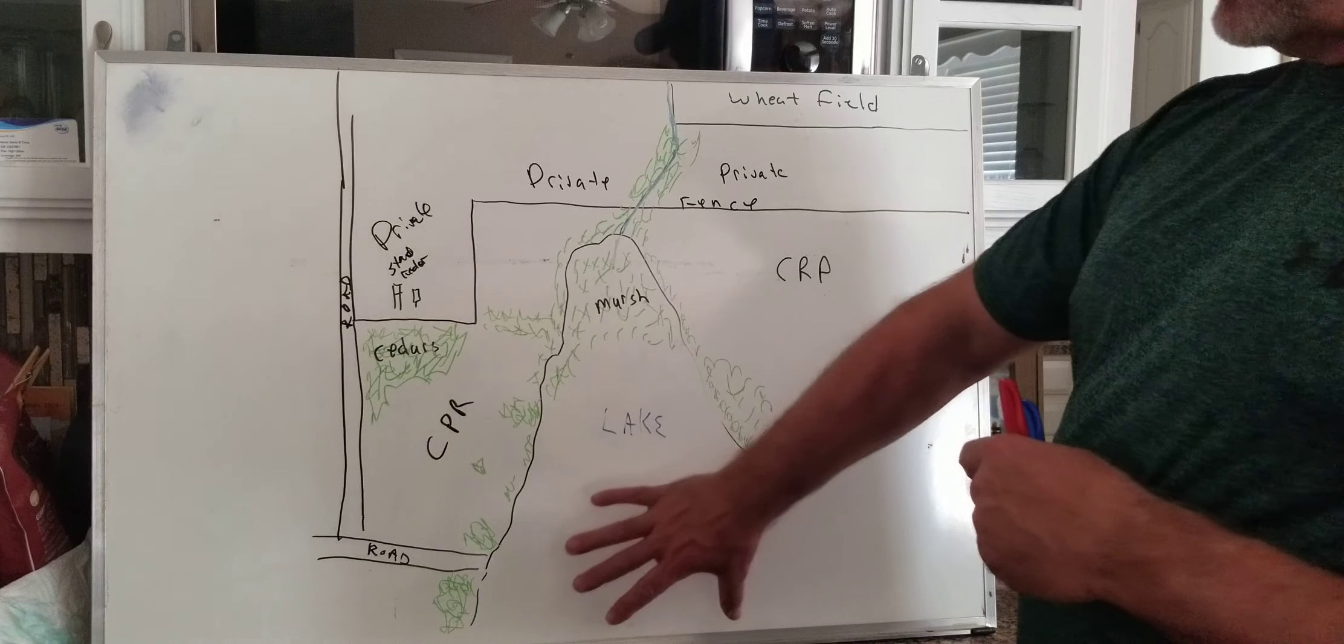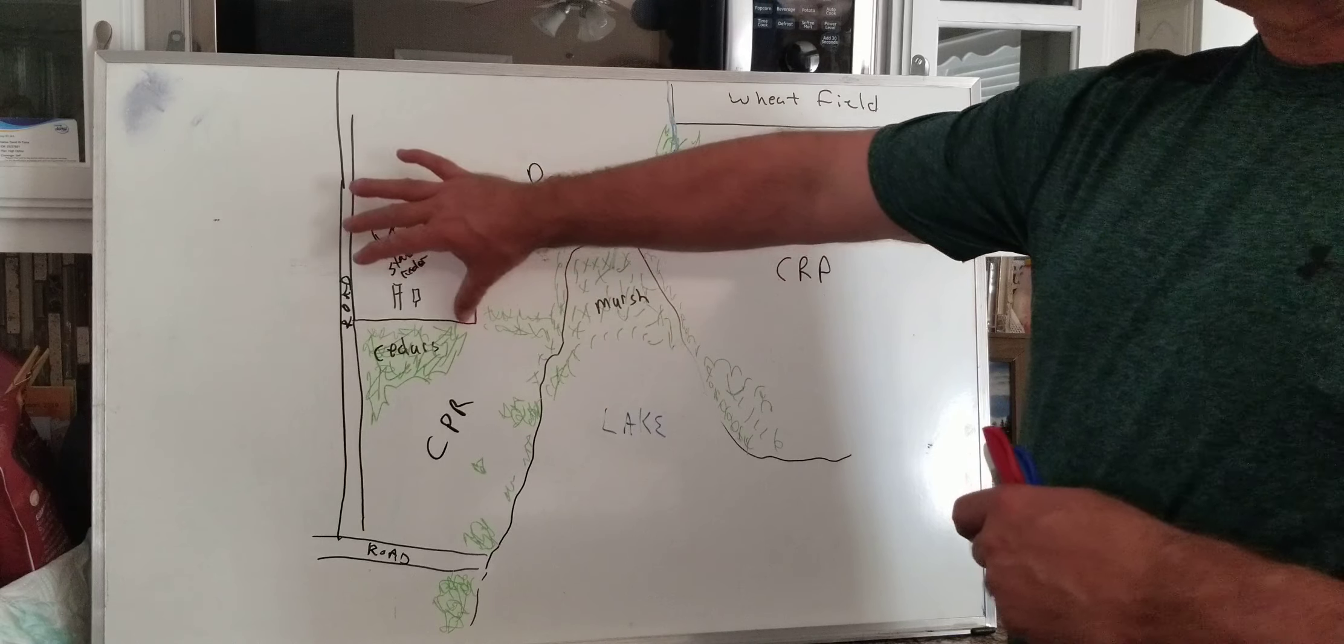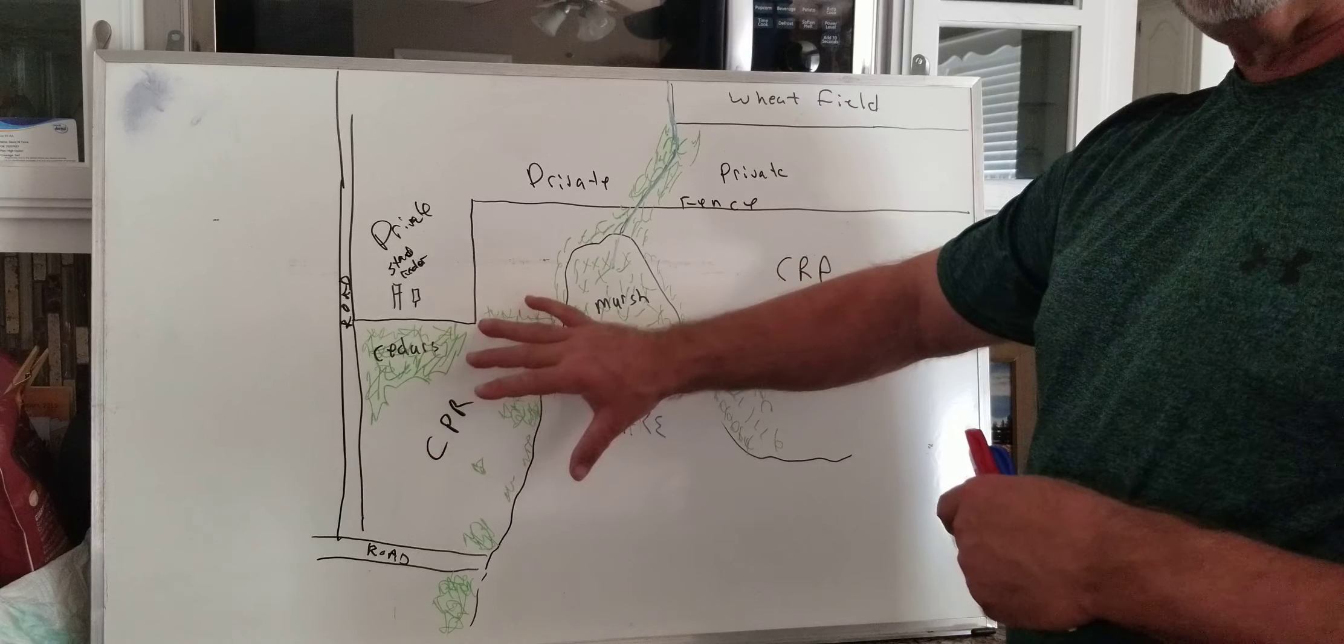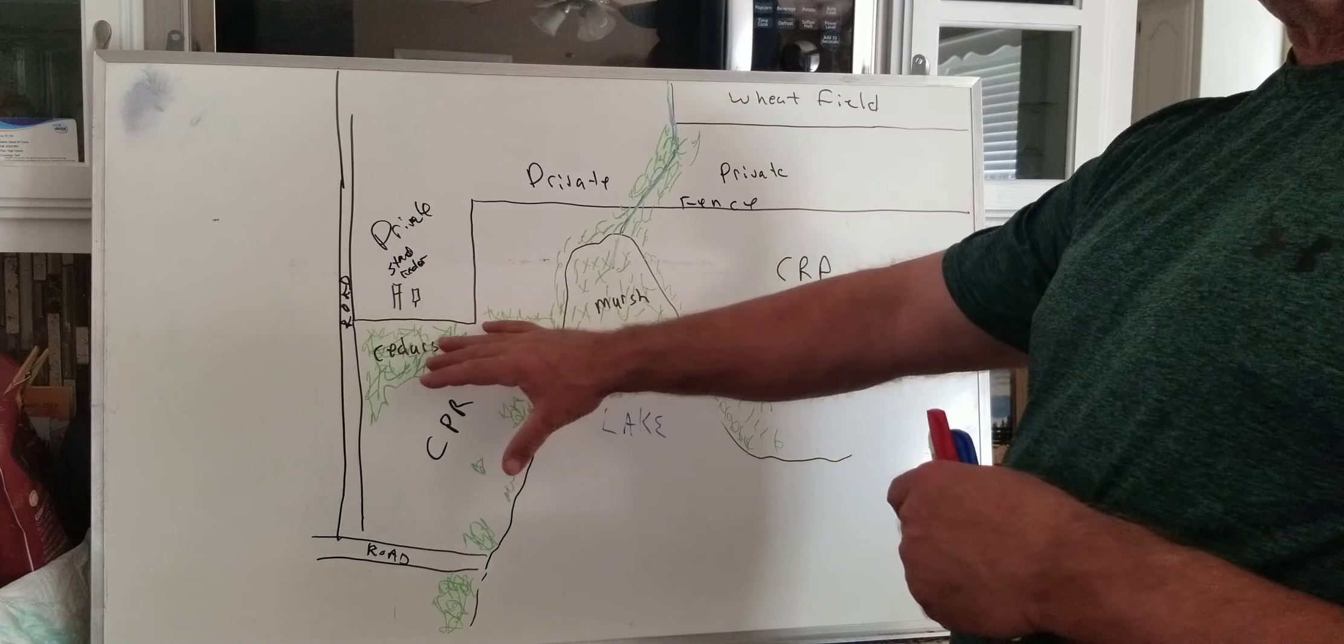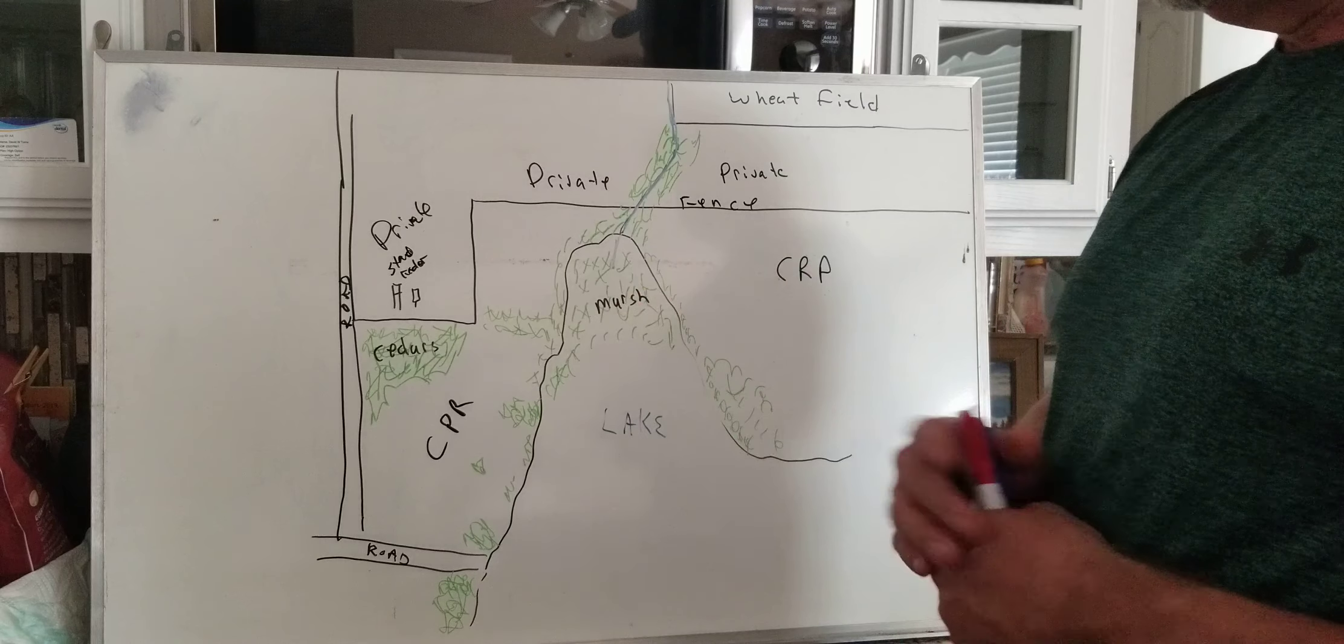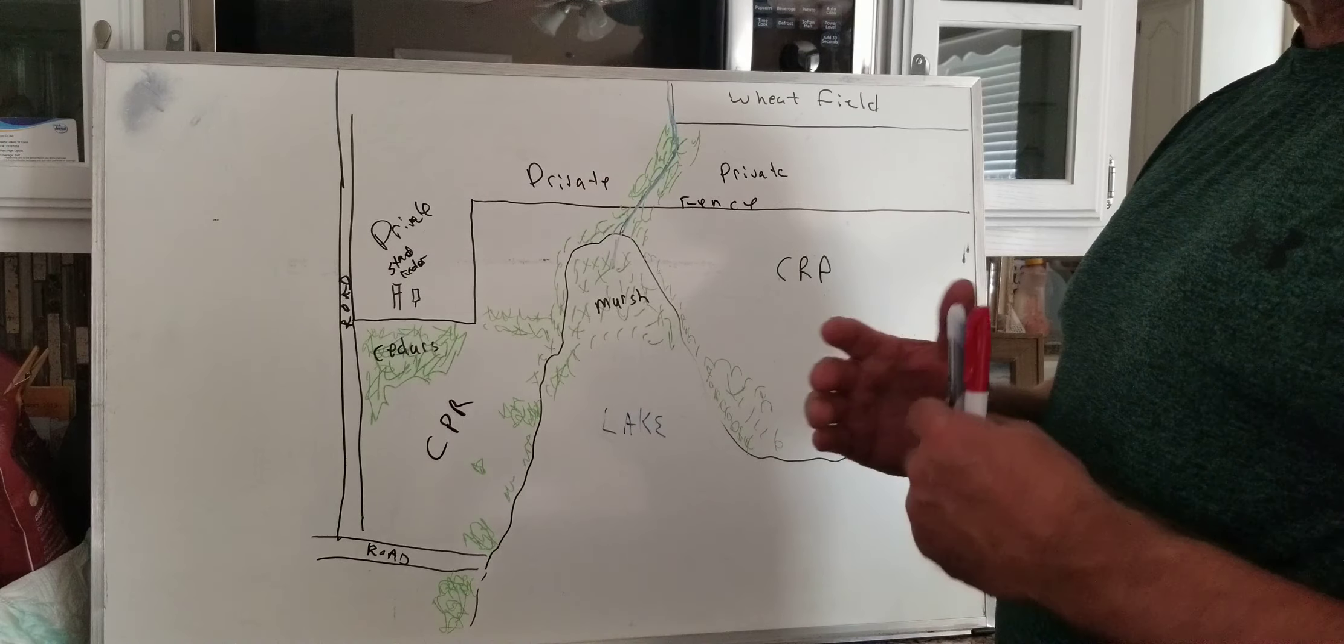Alright, so what we have here is a large reservoir in North Texas. It's surrounded by private ground. Right around the lake itself, you get some CRP public land. It's usually a lot of cedars, birch, bois d'arc or Osage Orange, whatever you want to call it, and just a lot of brush.